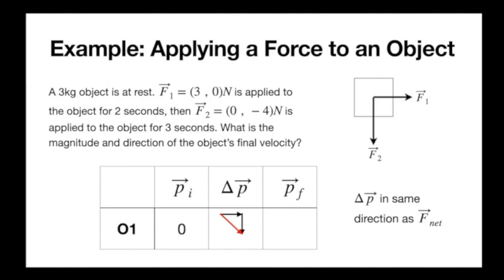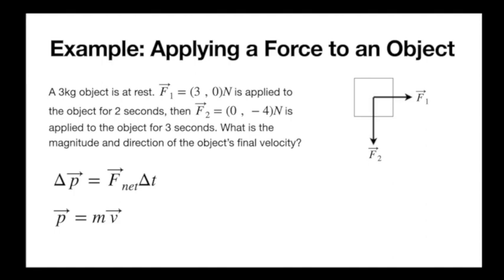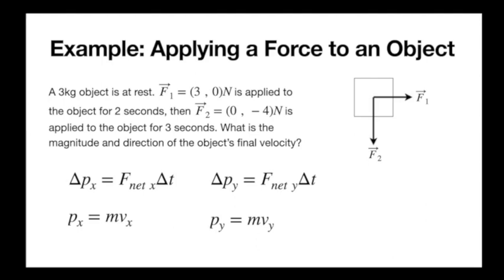The total ΔP is in the same direction as F_net. One force points right, the other points down, so our net force points right and down, and as a result our object moves right and down. P_initial is zero, so P_final equals ΔP. Turning this into equations: P_final = F_net · ΔT. Any vector equation like this can be broken into components — we can't algebraically work with it otherwise — so we get one equation for x and one for y.